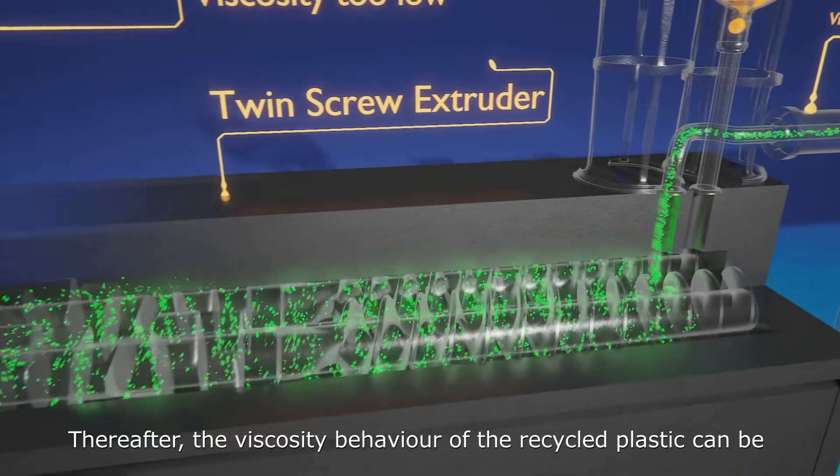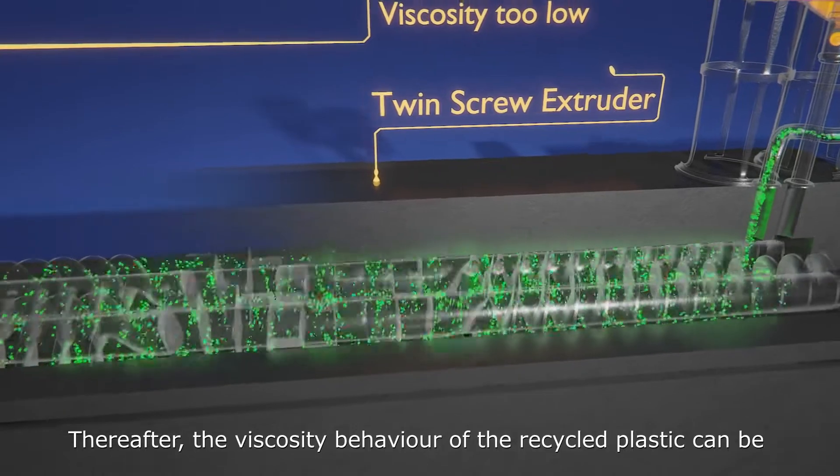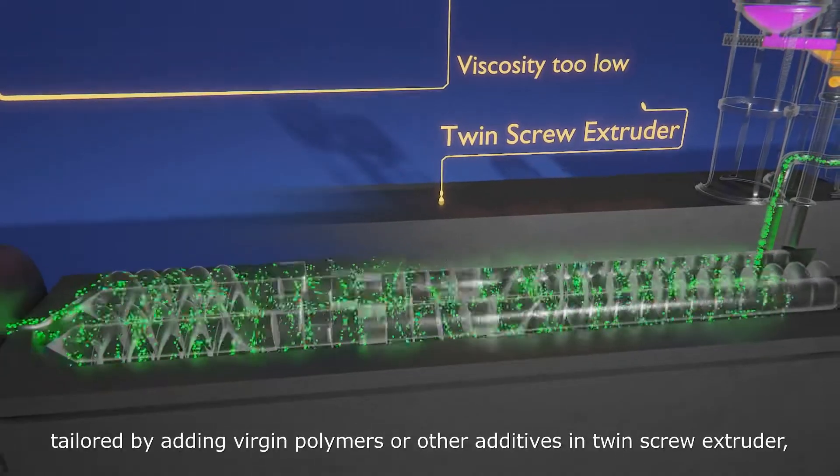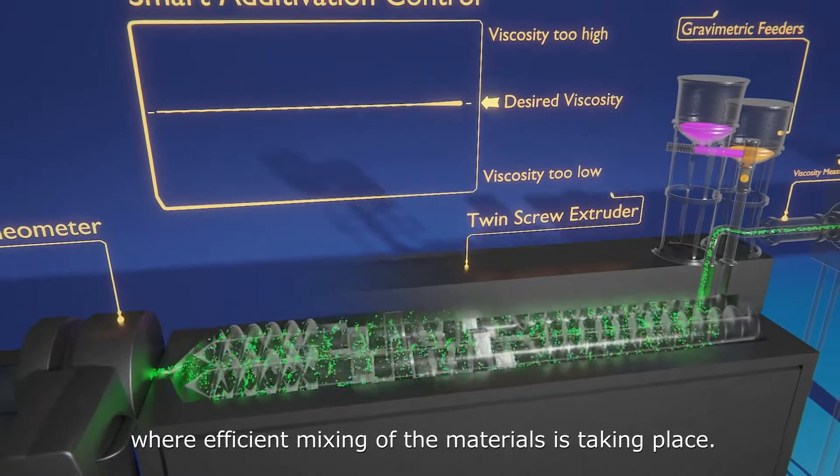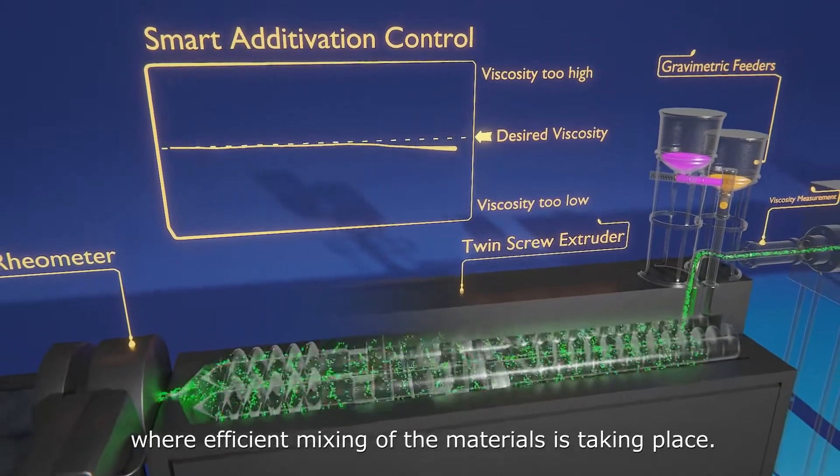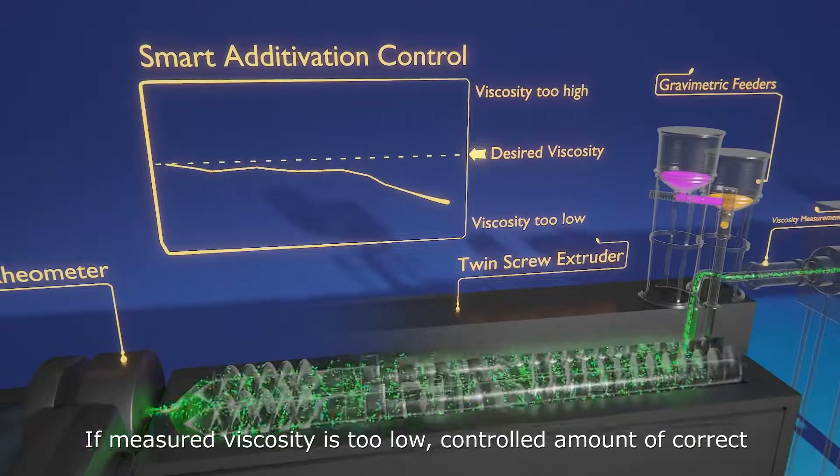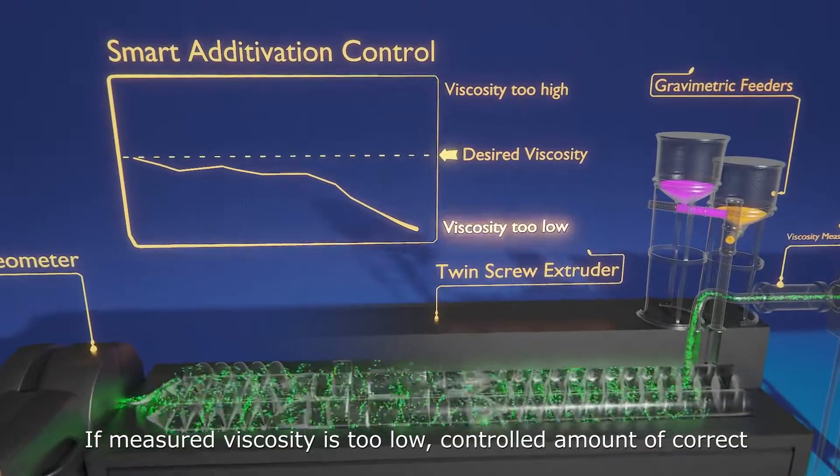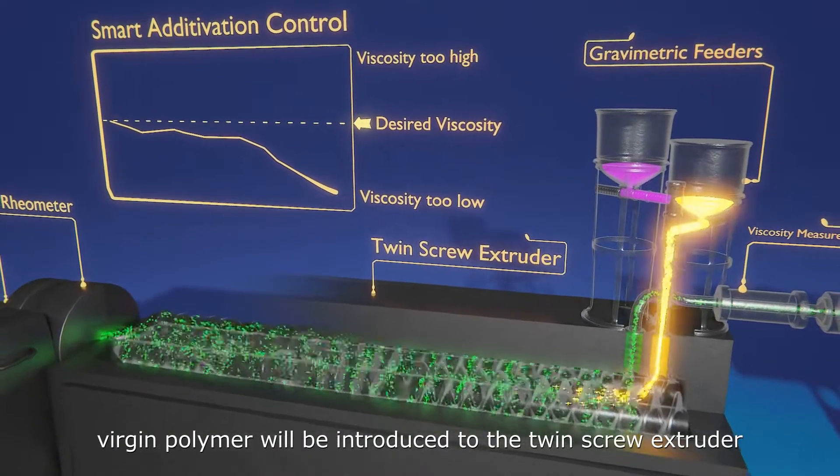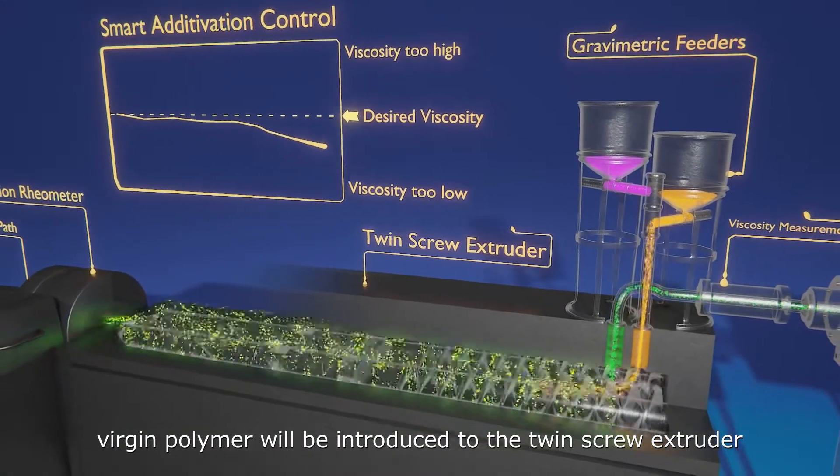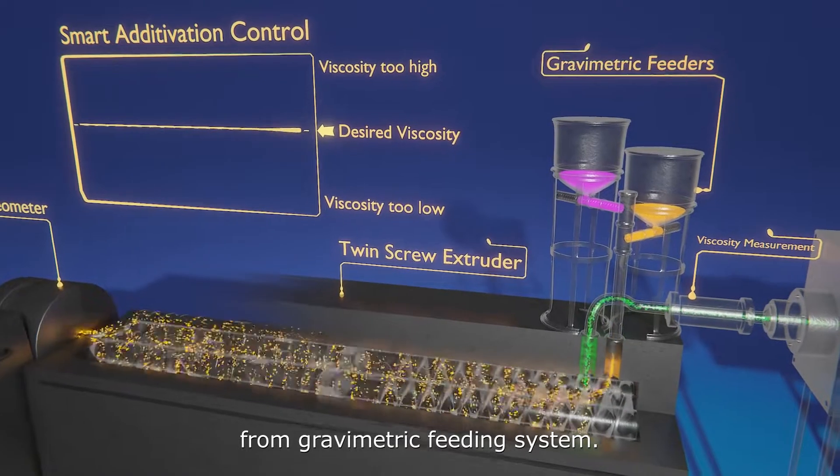Thereafter, the viscosity behavior of the recycled plastic can be tailored by adding virgin polymers or other additives in a twin screw extruder, where efficient mixing of the materials takes place. If the measured viscosity is too low, a controlled amount of correct virgin polymer will be introduced to the twin screw extruder from a gravimetric feeding system.